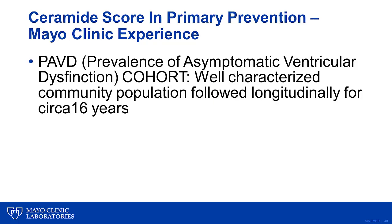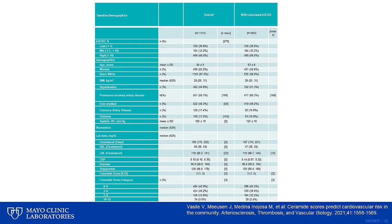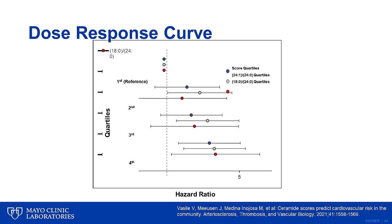I also wanted to bring the Mayo Clinic experience. We looked at a cohort of well-characterized community population subjects followed longitudinally for approximately 16 years — the PAVIT cohort — examining approximately 1,100 individuals with a risk profile very similar to a white Caucasian U.S. population. There was a clear association between the ceramide score and atherosclerotic events, with a hazard ratio of 1.63 for the second quartile and 2.63 for the fourth quartile, demonstrating a dose-response curve: the higher the ceramide score, the higher the atherosclerotic events.